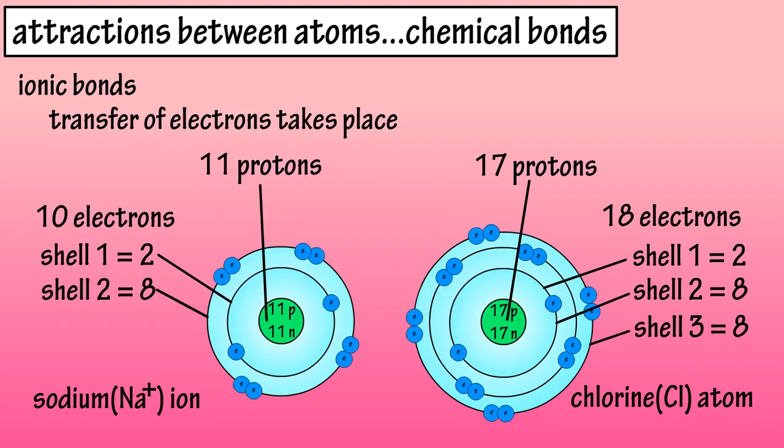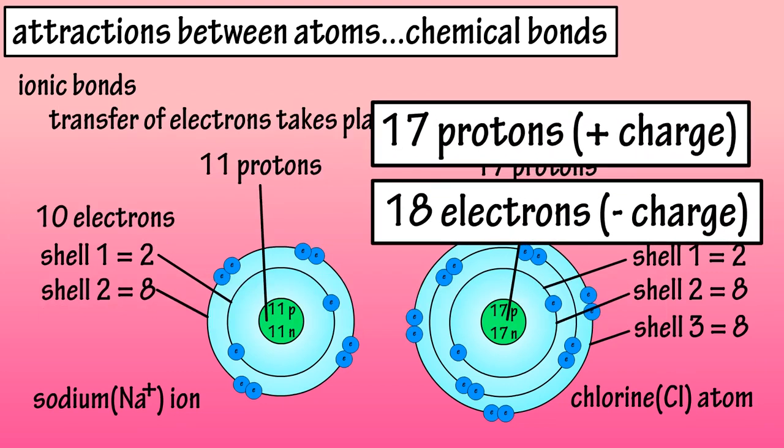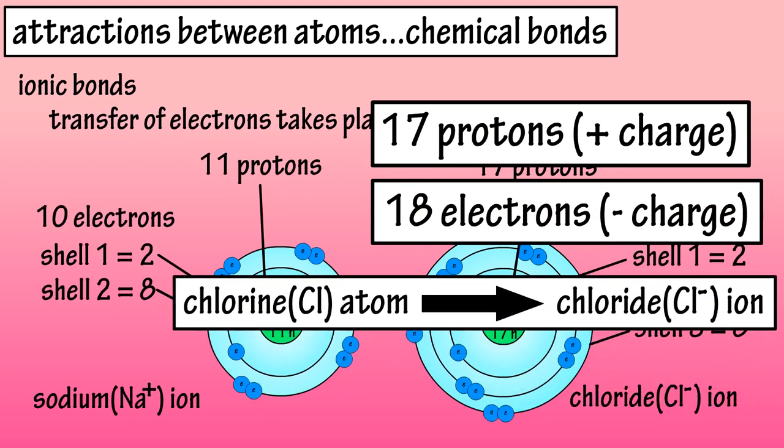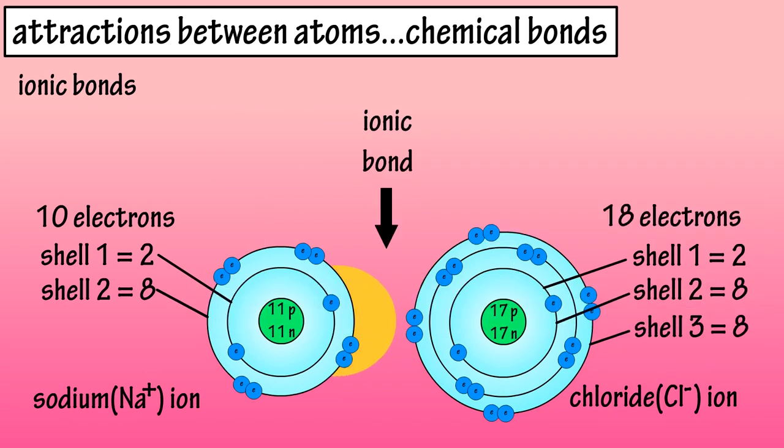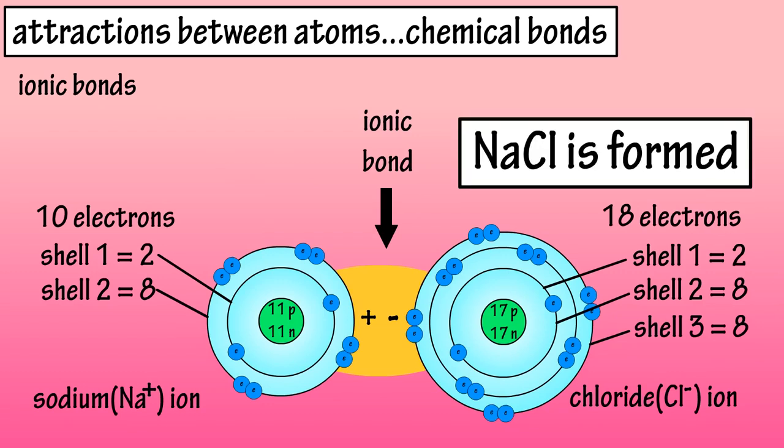Since the chlorine atom gained an electron, and now has 17 protons and 18 electrons, it is a chloride ion with a negative charge. The positively charged sodium ion is now attracted to the negatively charged chloride ion, and NaCl, or table salt, is formed. This is an ionic bond.